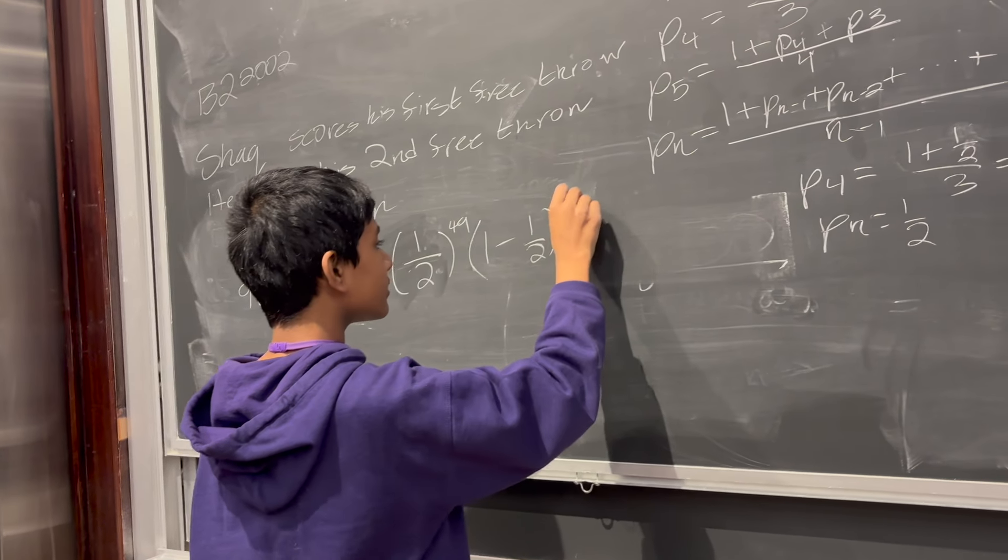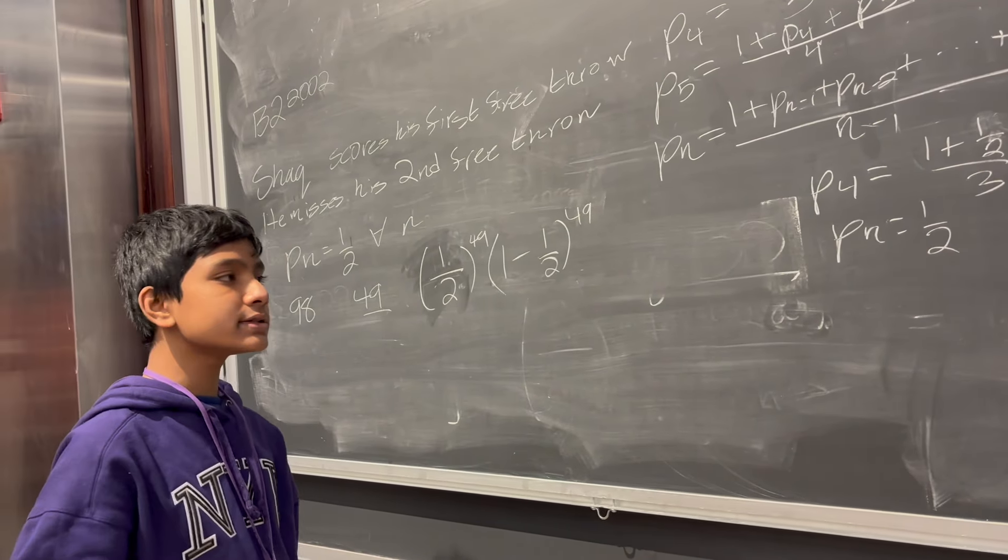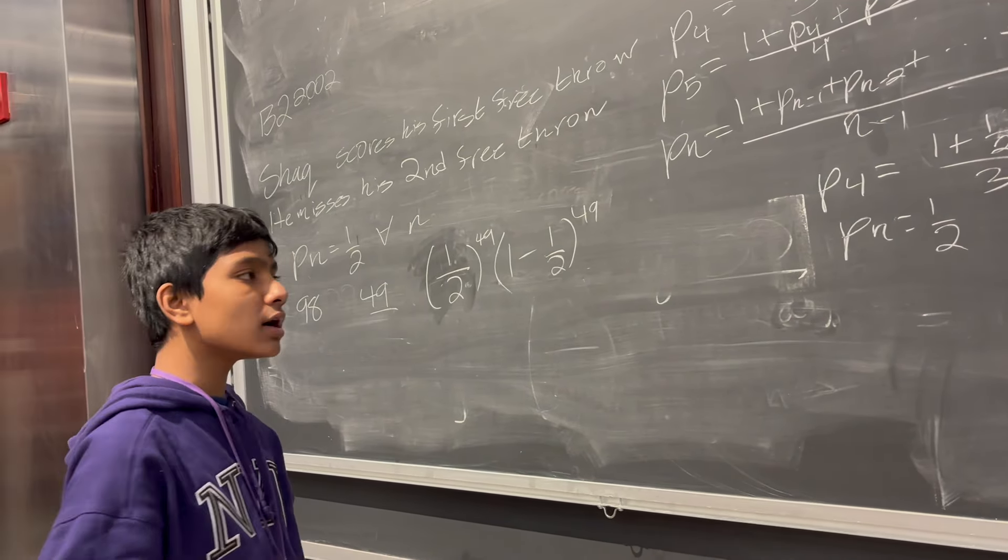So for all of these events to happen, there's a 1 in 2 to the 49 chance for him to hit all of the 49 shots, 1 minus 1 half he can miss the rest of the 49 shots. And then multiply by the amount of ways he can rearrange those scores, which is just 98 choose 49. So that's equal to 98 factorial over 49 factorial squared times 1 half to the 98.